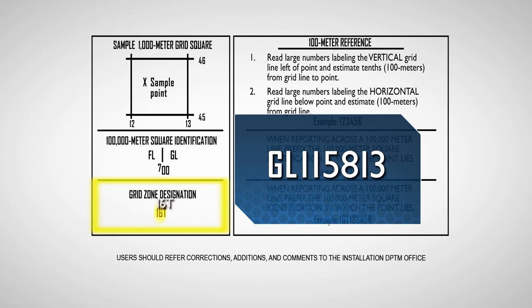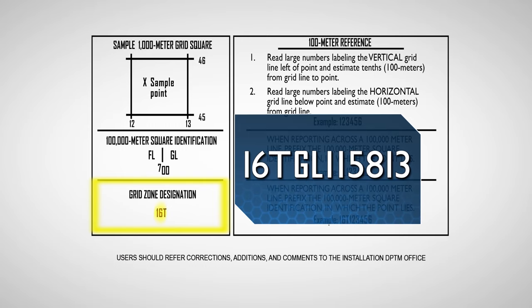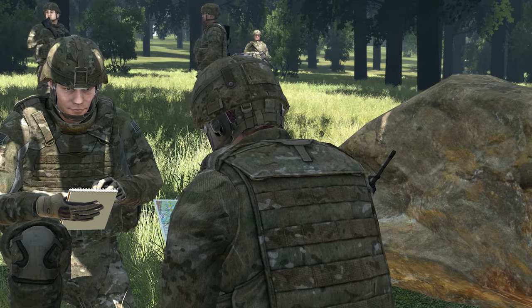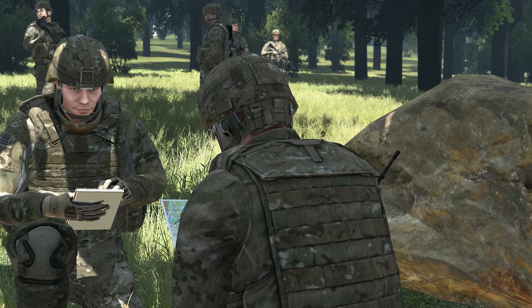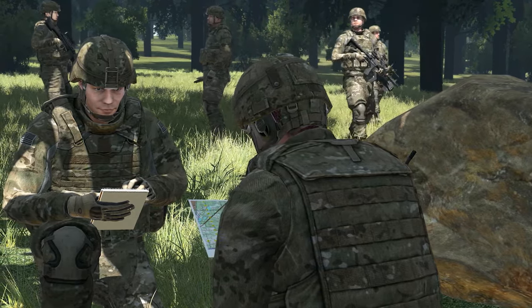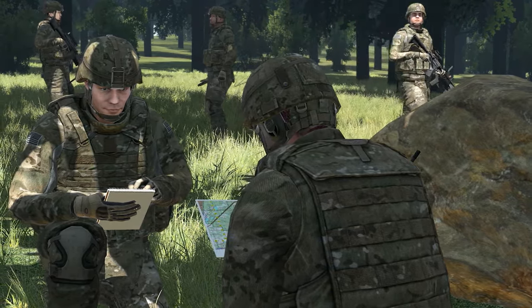Place the grid zone designation, 1-6-Tango, in front of the 100,000-meter square identifier, Gulf-Lima, and the grid coordinate, 115,813. The final grid coordinate becomes 1-6-Tango, Gulf-Lima, 115,813. By learning to utilize the grid system, you will be able to locate any point on a map in order to perform any number of land navigation tasks.